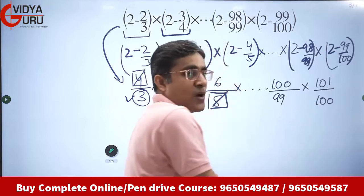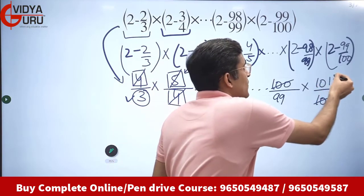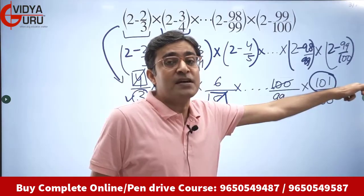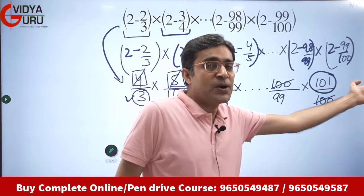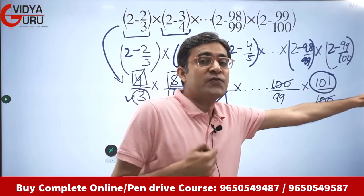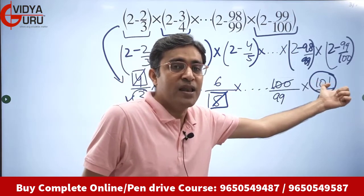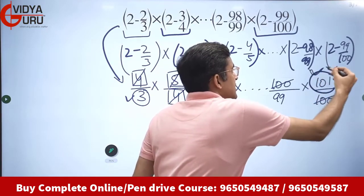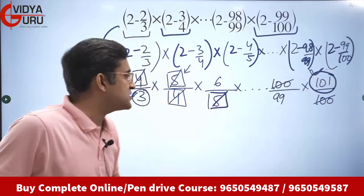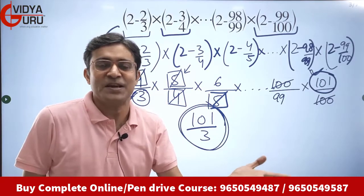From the last term (2 − 99/100): LCM is 100, 2×100 − 99 = 101, giving 101/100. The 100 gets cancelled by the denominator pattern. This 101 remains in the numerator because the series ends here — there is no next term to cancel it. So we have 101 in the numerator from the last term and 3 in the denominator from the first term. The answer is 101/3.